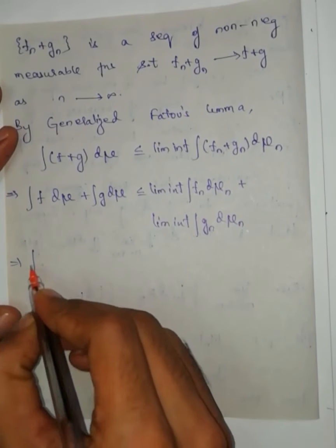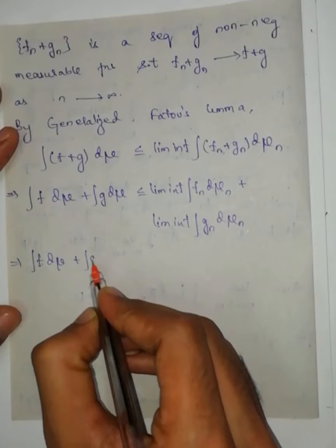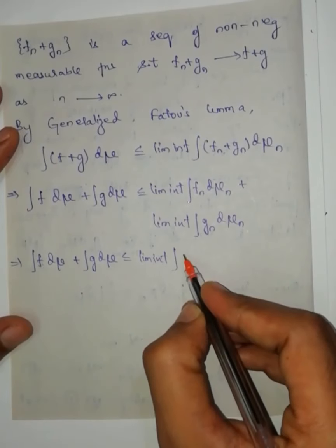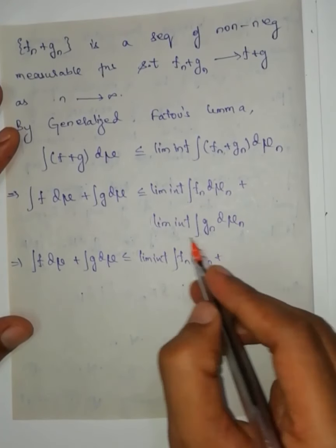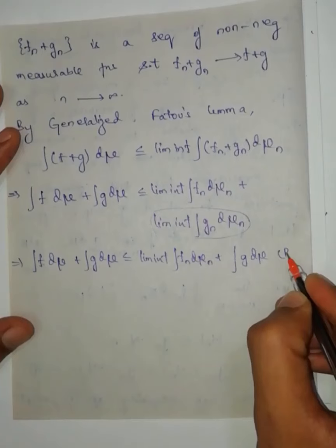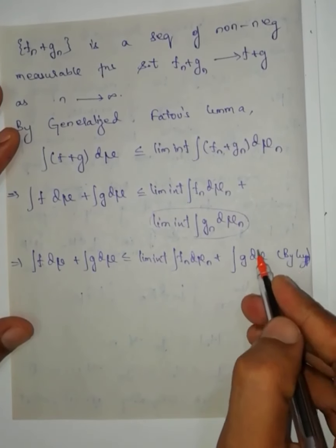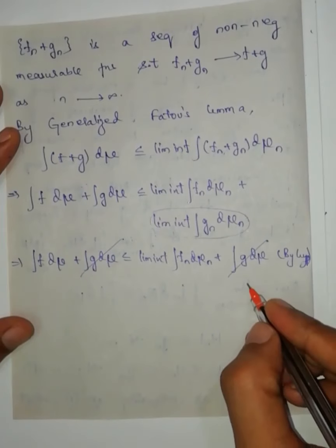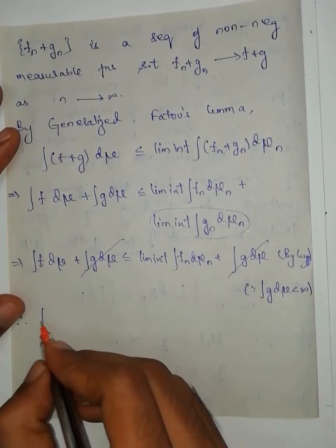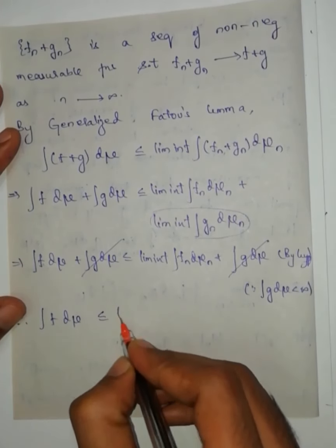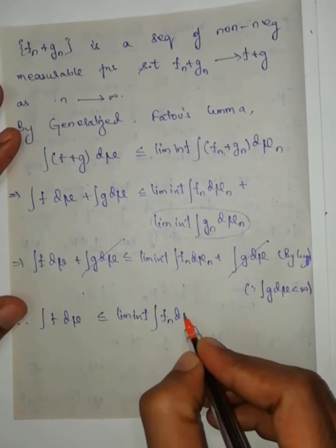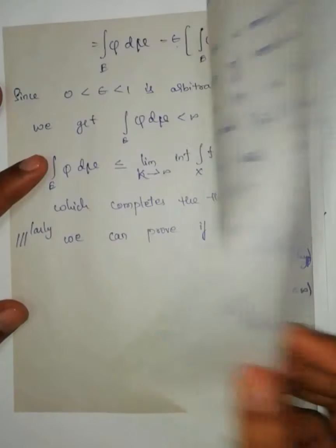This implies ∫f dμ + ∫g dμ ≤ lim inf ∫f_n dμ_n + ∫g dμ, since by hypothesis lim inf ∫g_n dμ_n = ∫g dμ. We can cancel ∫g dμ from both sides since ∫g dμ is finite. Therefore ∫f dμ ≤ lim inf ∫f_n dμ_n. Let us call this equation number 2.